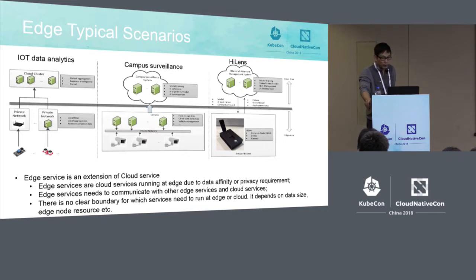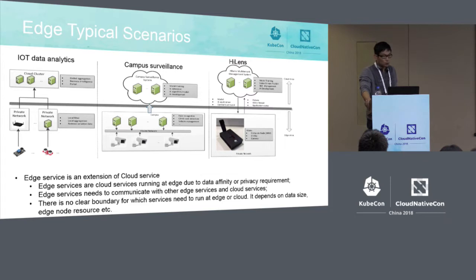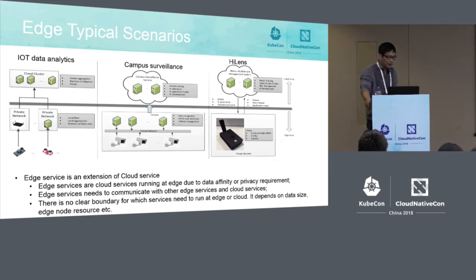But if we have Highlands as the edge node — which has a D-chip and NPU — it can handle larger models, so we can put face recognition at the edge. Therefore, whether we deploy a service to the edge or to the cloud depends not only on data size and data affinity, but also on the edge node's available resources. This is a common scheduling issue.